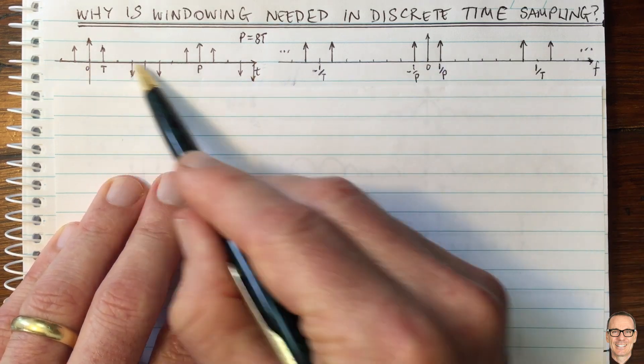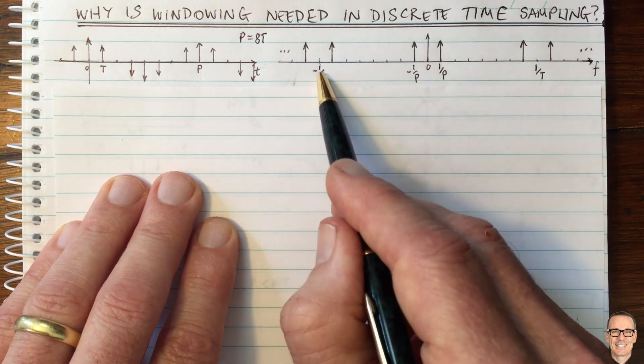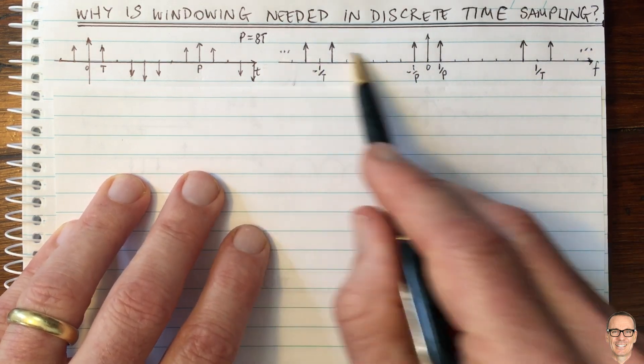And because we've sampled it, there will be copies appearing at one on T and negative one on T and so on. Two on T, negative two on T, and so on.